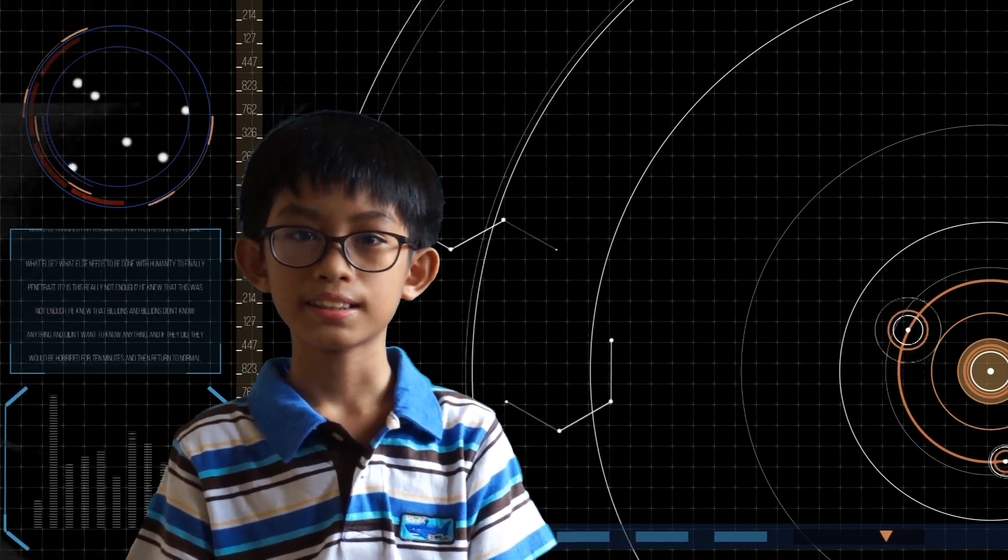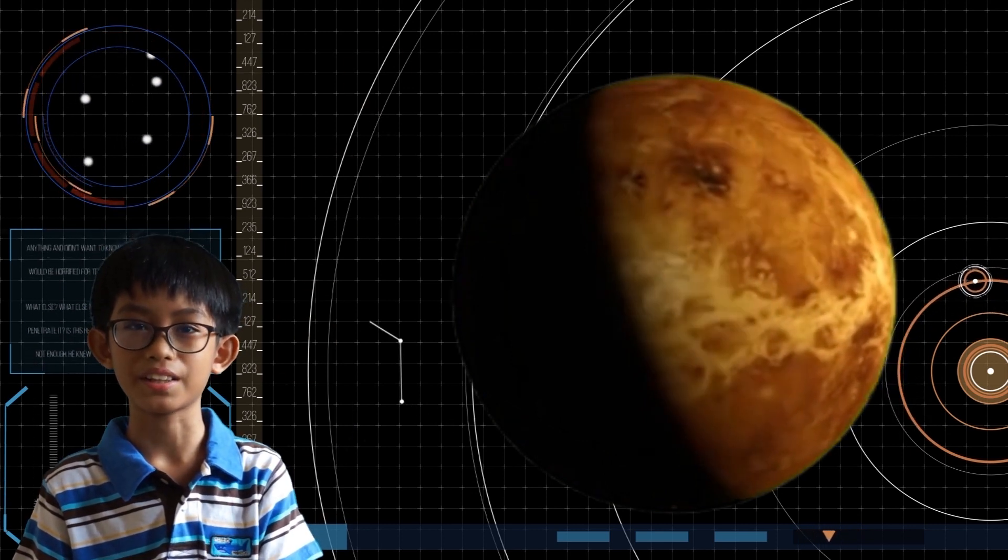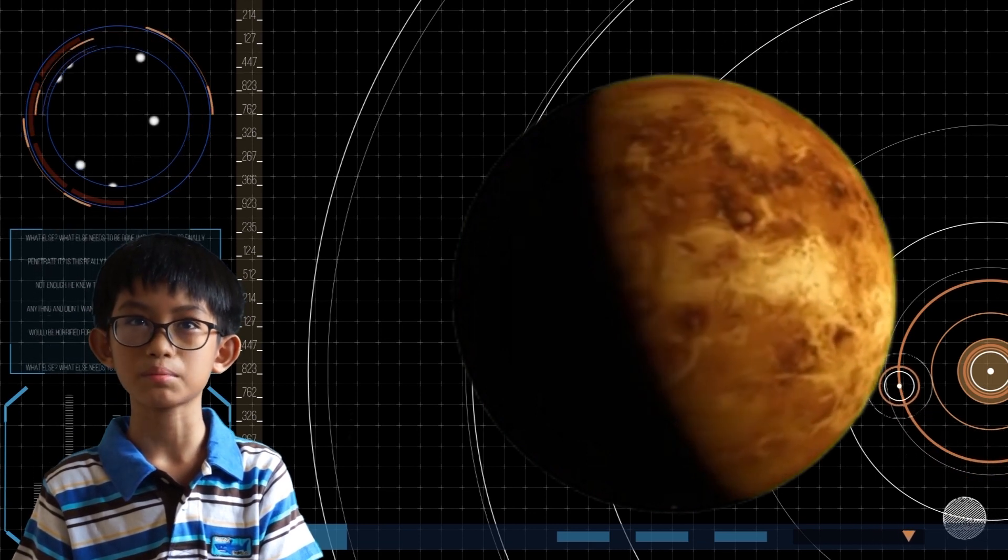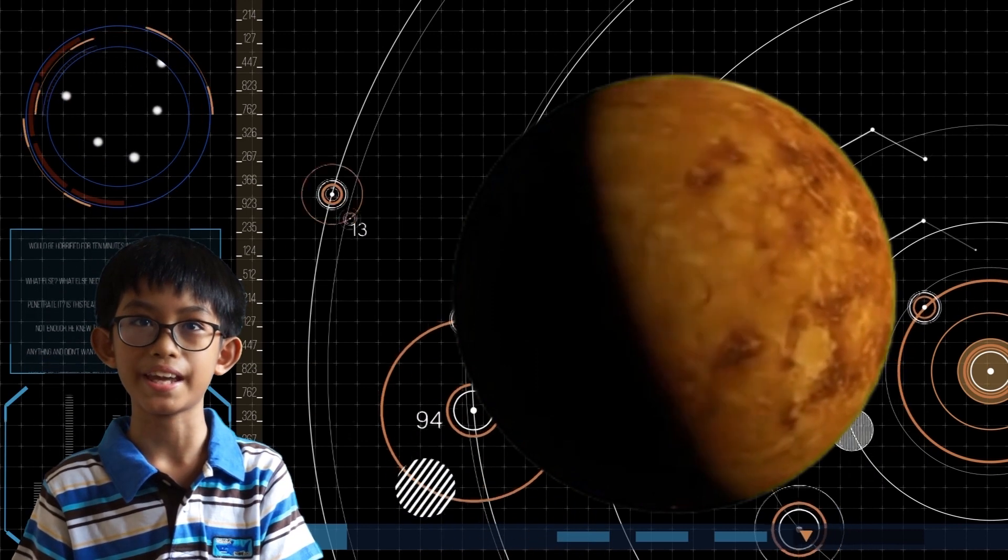The second planet from the Sun is Venus. Venus, even though it is the second planet, is hotter than Mercury. This is because it has a greenhouse effect. It traps all the heat from the Sun so it cannot go out, and this makes the planet hotter and hotter every day.